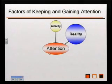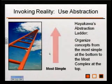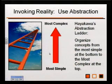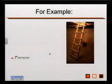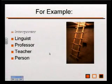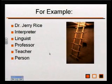The next factor of keeping and gaining attention is reality, which involves invoking or suspending reality. Hayakawa had an idea that we categorize things from the most simple to the most complex — the ladder of abstraction. The ladder goes from the most simple things to the most complex. We have an example: a person, more specifically a teacher, more specifically a professor, then a linguist, then someone with interpreter training.